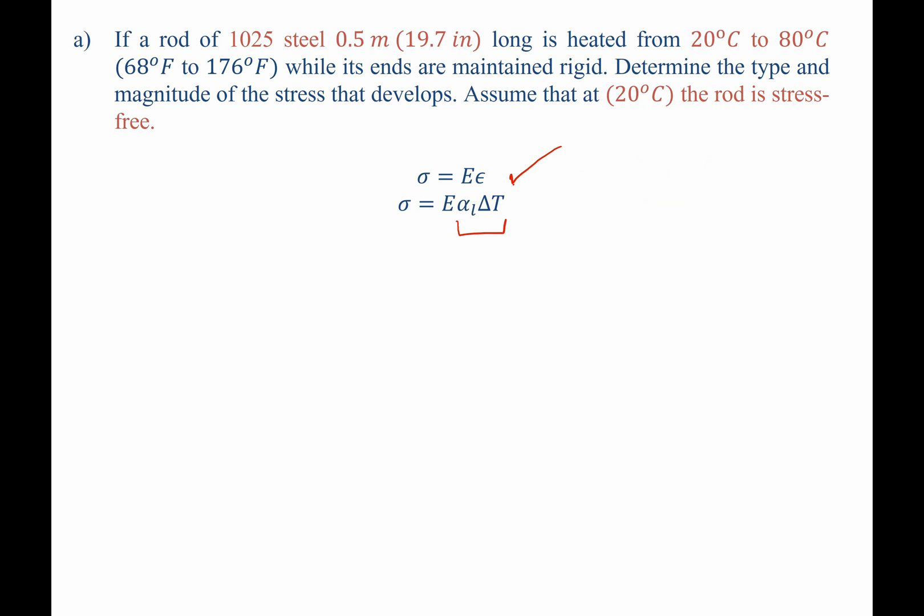The one thing to watch for where it can commonly be a mistake here is that if you want your stress to come out with the correct sign for tension or compression, we have to take T-naught minus TF for our change in temperature. Normally you take final minus initial. Here we have to take initial minus final if we want to get the correct sign convention.